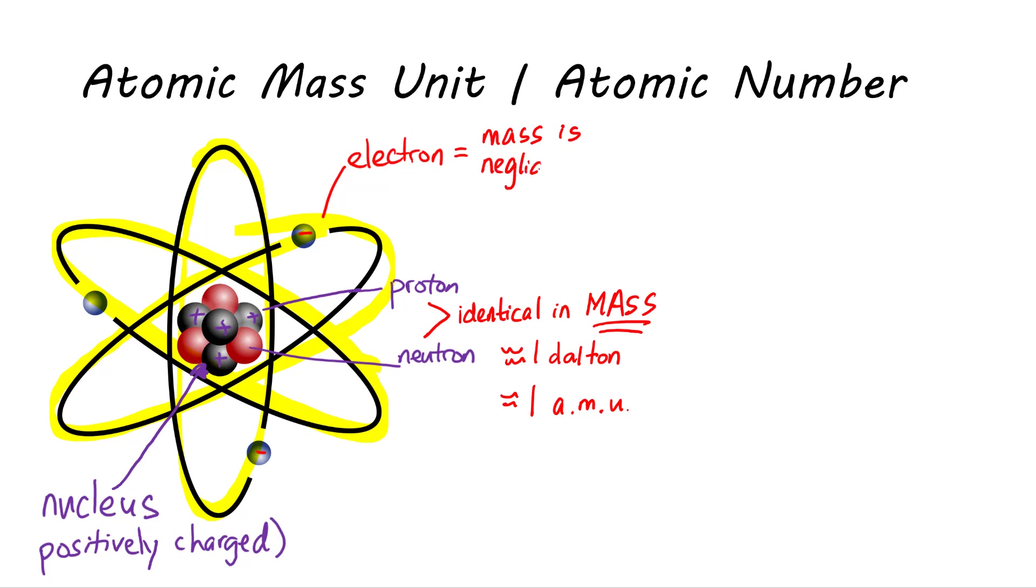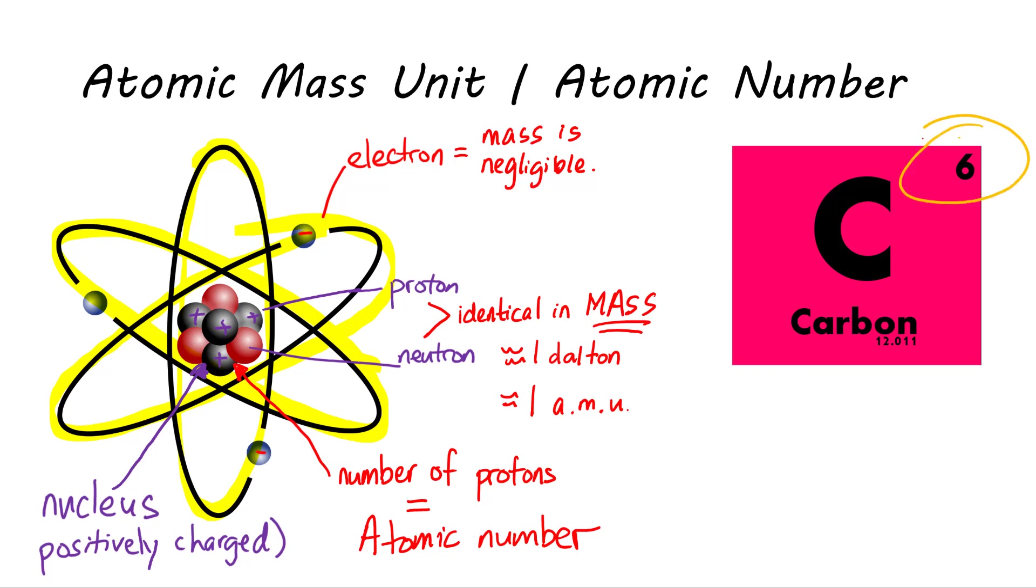For every unique element, all atoms of that particular element will have the same number of protons in their nuclei. This number of protons is also known as the element's atomic number. Carbon has a number of 6 as its atomic number, which means that it is the 6th element in the periodic table, and it has 6 protons. An atom is also, by definition, neutral in charge, net charge equals to 0, unless stated otherwise.